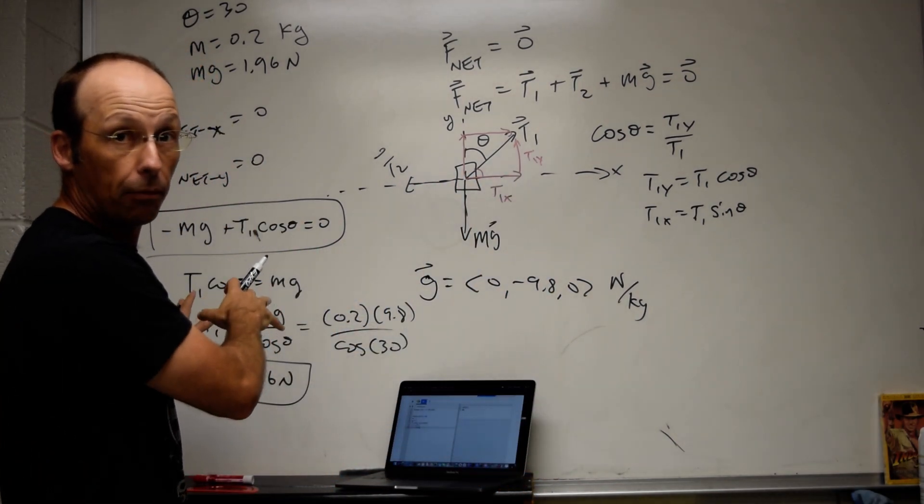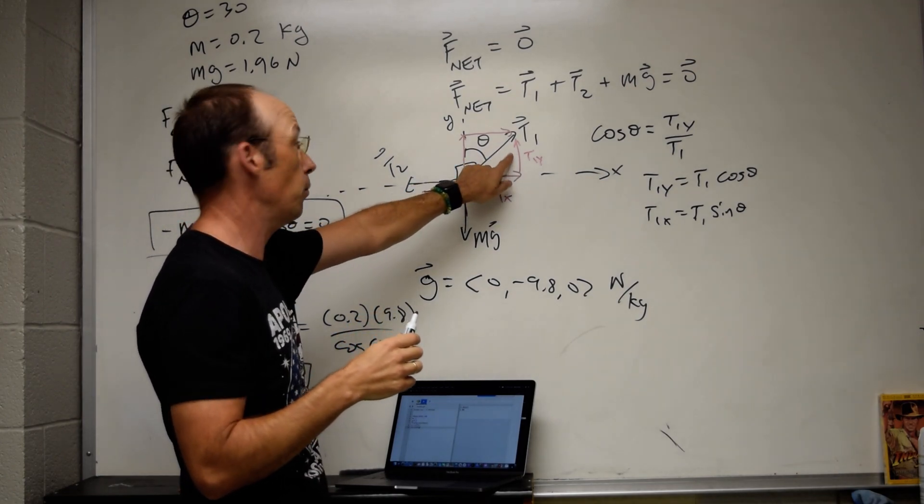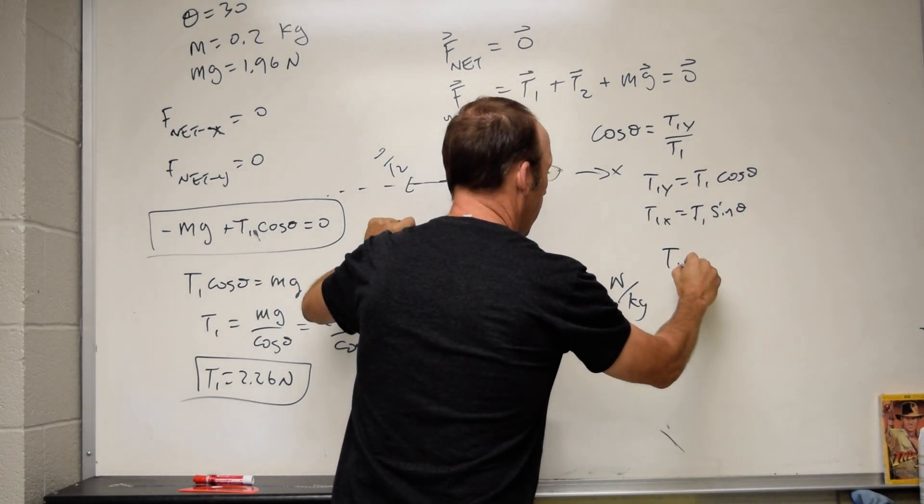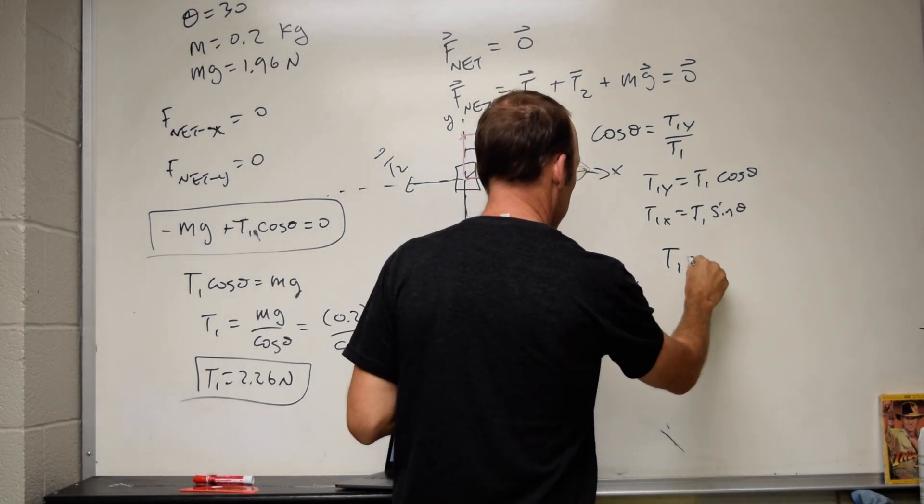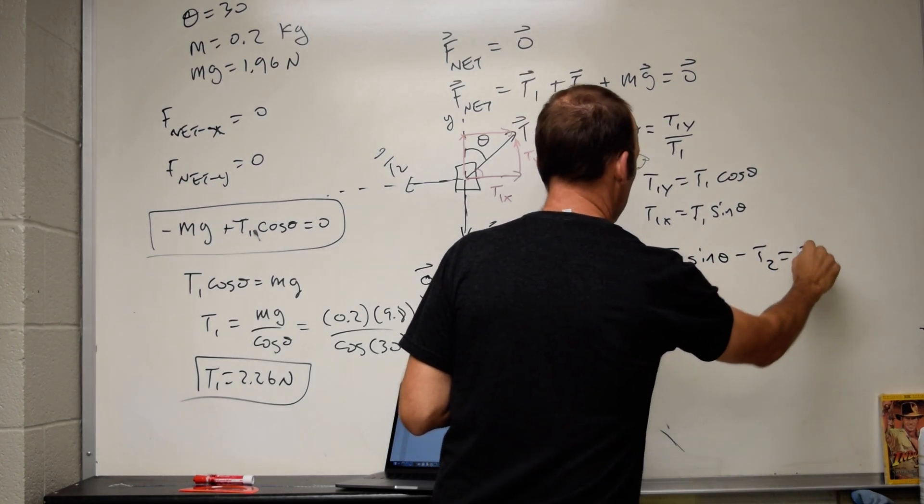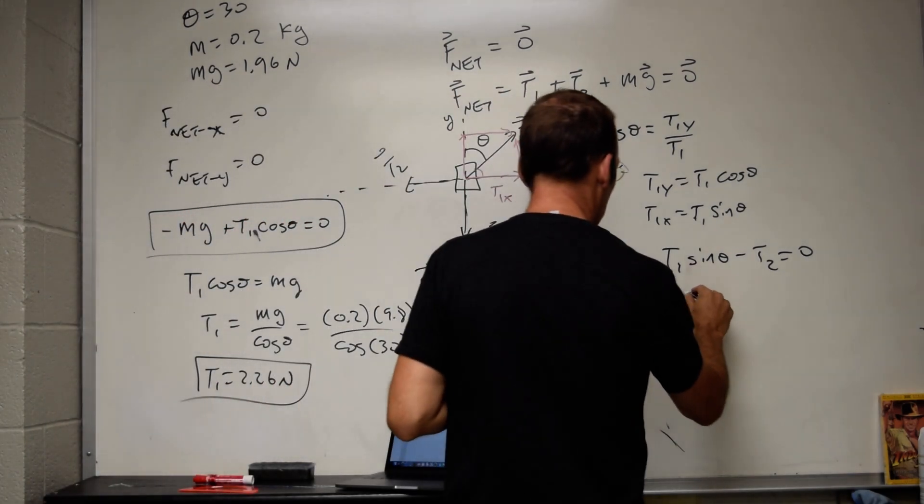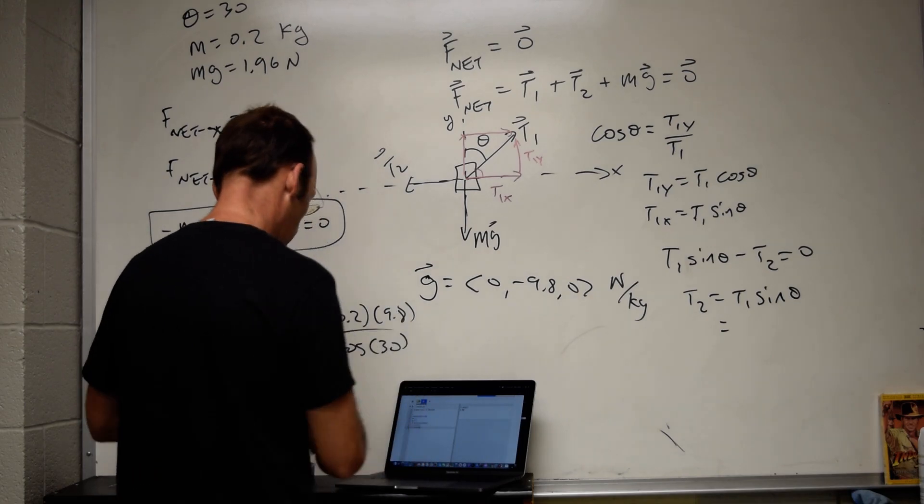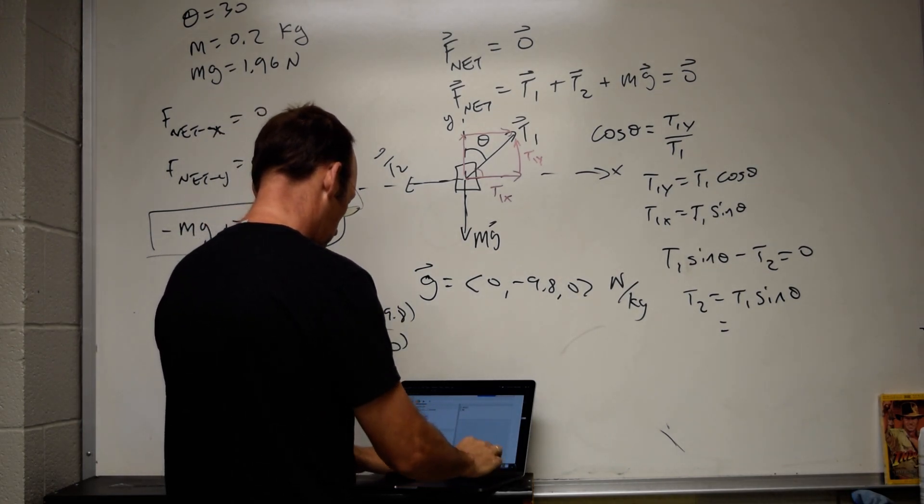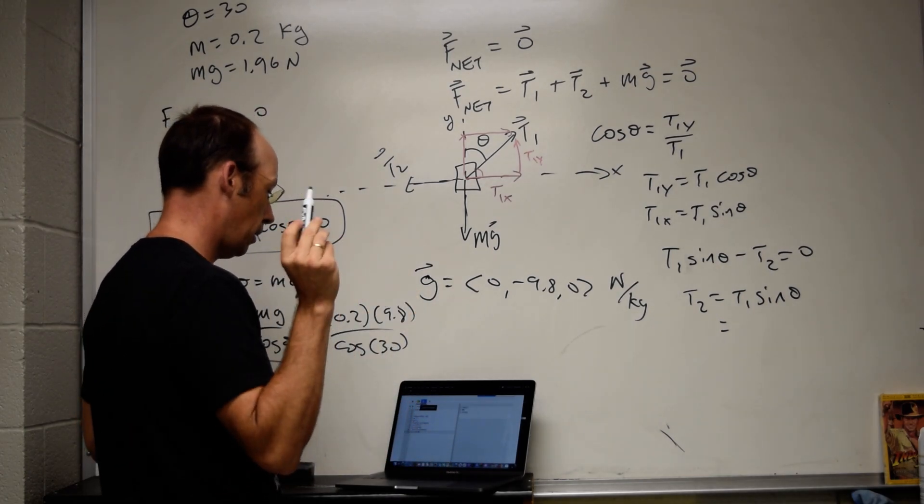So now if I look at the x direction, there are two forces in the x direction. There's the x component of T1 and the y component of T2. So I'm going to get T1x, which is just going to be T1 sin theta, minus T2 equals 0. So T2 is in the negative x direction and it has no y component. So right now I can solve for T2. T2 equals T1 sin theta.